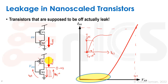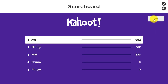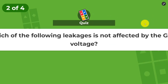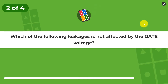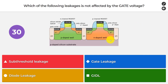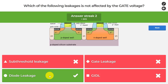So back to our Kahoot: the answer is the PMOS, as we saw. Our second question: which of the following leakages is not affected by the gate voltage? Is it sub-threshold leakage, gate leakage, diode leakage, or GIDL? The answer is diode leakage. We use that question to overview the different leakages we have in our transistor.